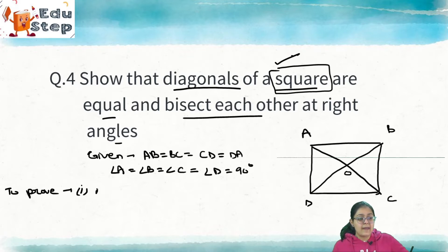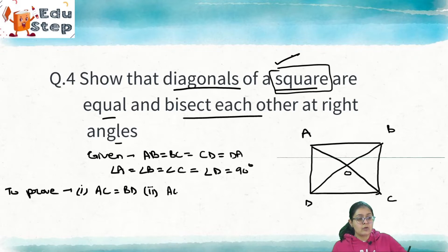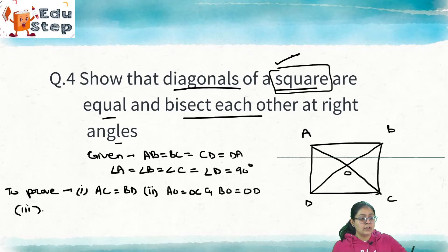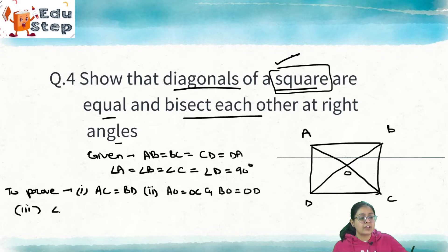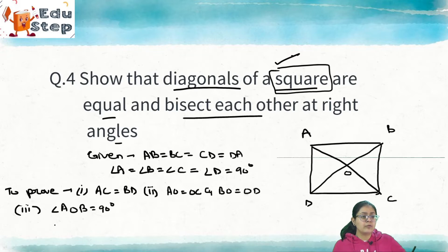First, we have to prove that AC = BD, meaning both diagonals are equal. Second, we have to prove that AO = OC and BO = OD, meaning the diagonals bisect each other. Third, we have to prove that the angle at the center — angle AOB — is equal to 90 degrees.